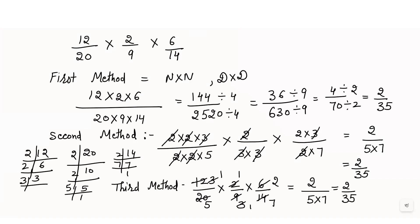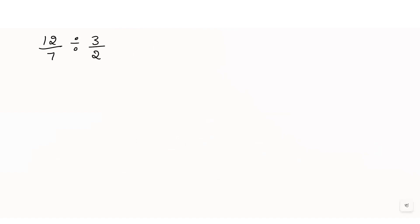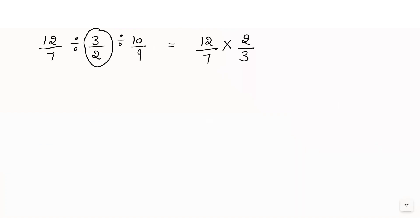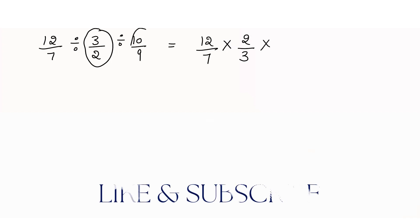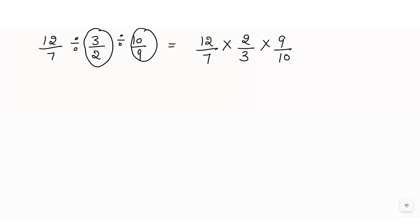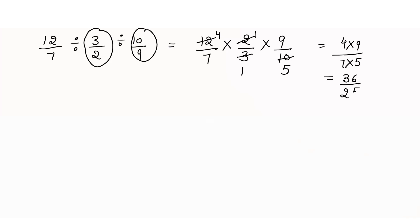Now let's understand how to divide 3 different fractions. The example is 12 by 7 ÷ 3 by 2 ÷ 10 by 9. To divide fractions, change the division sign to multiplication and write the reciprocal of the number after the division sign. So 3 by 2 becomes 2 by 3, and 10 by 9 becomes 9 over 10. Using the third method: 3 and 12 — 3 ÷ 3 = 1, 12 ÷ 3 = 4. 2 and 10 — 2 ÷ 2 = 1, 10 ÷ 2 = 5. So we write 4 × 9 over 7 × 5, giving 36 over 25.